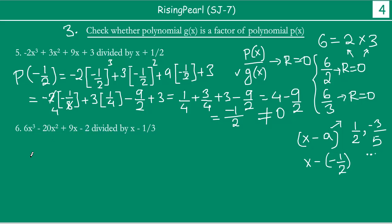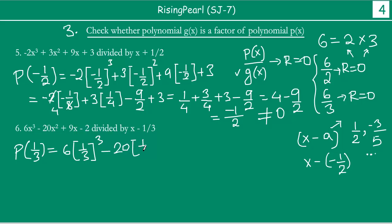This is the last example. Going by the same principle, we are going to find the value of this polynomial at x equal to 1/3. It is already in x minus a form, so we find the value at 1/3. So: 6 times (1/3) cubed, minus 20 times (1/3) squared, plus 9 times (1/3), minus 2.